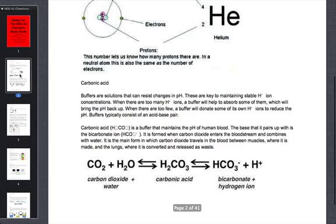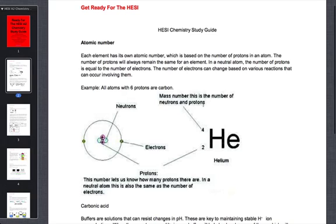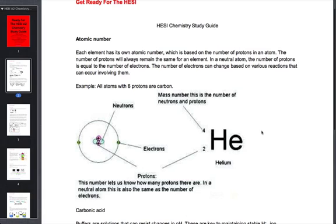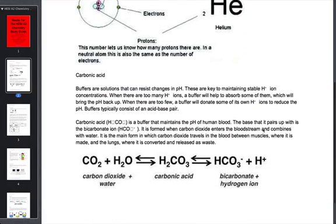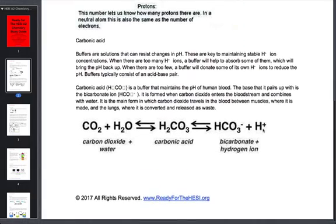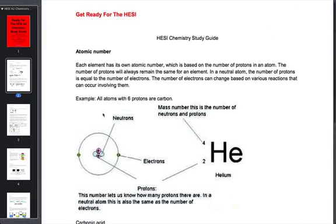So let's get right to it. We covered the main topics that you need to know for chemistry. Some of those main topics include the atomic number. So if we go into detail, we explain what it is. We have graphics to let you see exactly what each chemistry term means. So here's these for the atomic number.